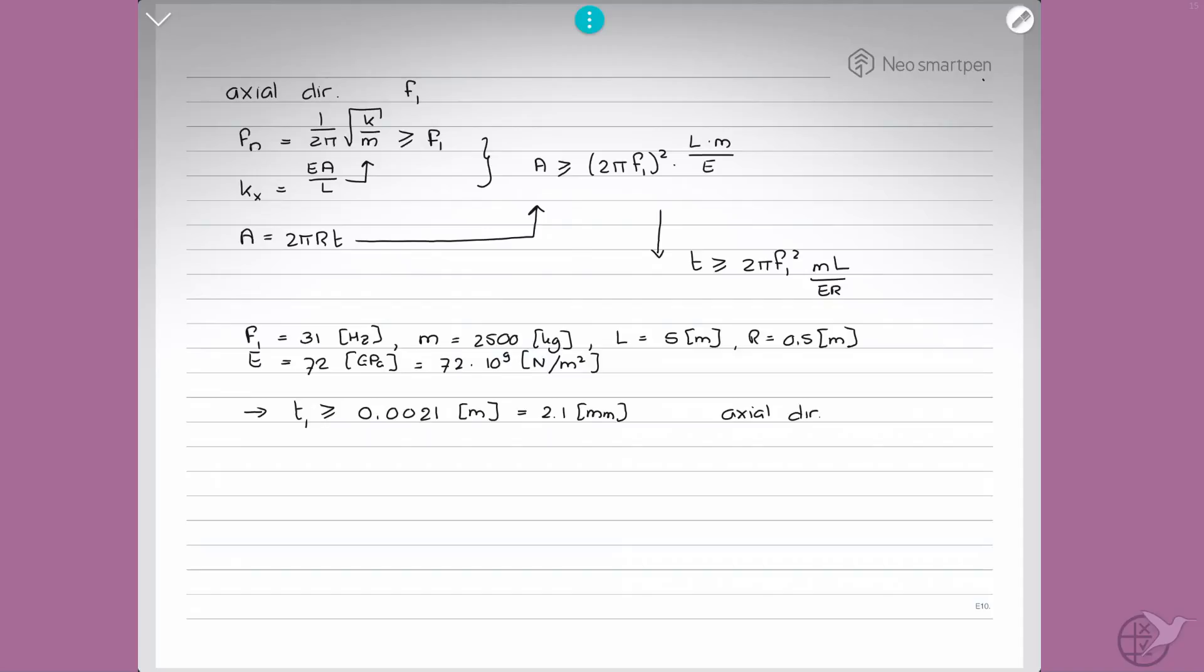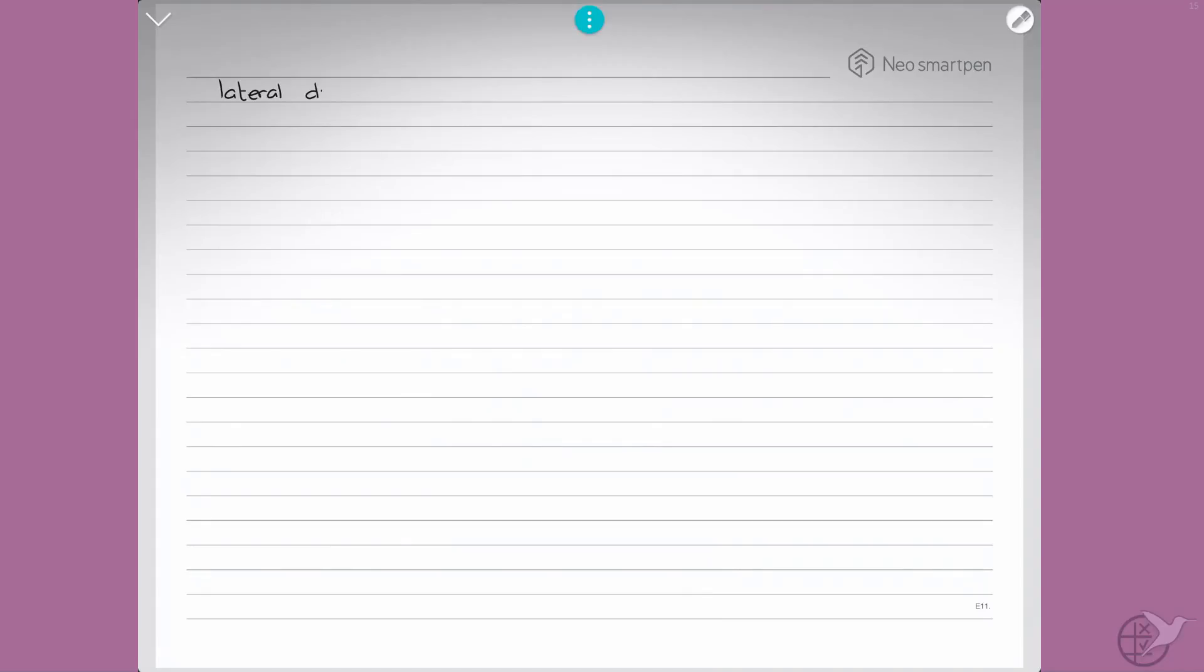Now we'll look at lateral direction. We will call that minimum natural frequency f2. So the natural frequency then has to be larger than this f2. And the stiffness in lateral direction, ky, is then equal to 3 times EI over L cubed. And if we substitute this in here, what we find for the area moment of inertia for bending is that I has to be larger or equal to 2π f2 squared times L cubed times m over 3 times the modulus of elasticity.